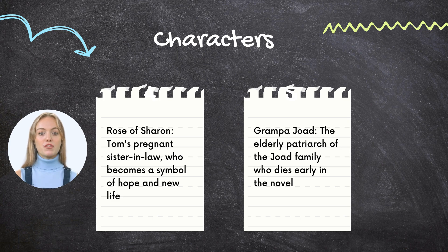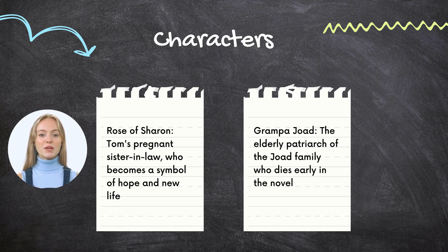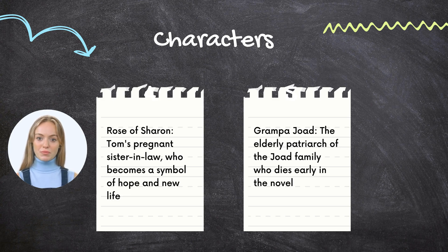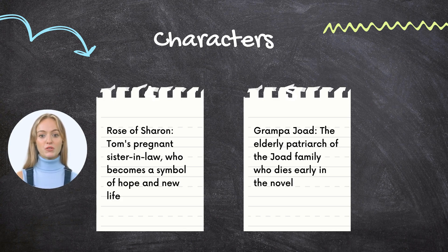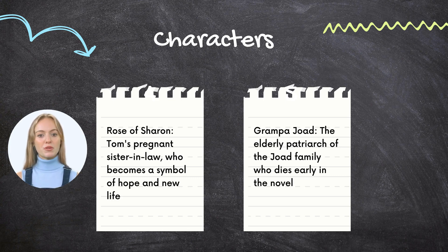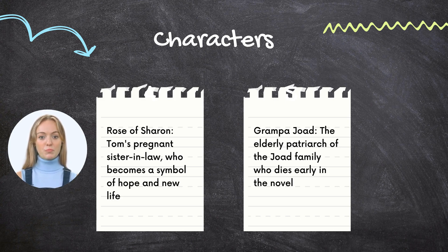Grandpa Joad is a symbol of the traditional values and ways of life being threatened by the Great Depression. He is deeply attached to his land and community in Oklahoma and resists leaving even when their farm is repossessed. Over time, Grandpa Joad becomes increasingly frail and disoriented, eventually dying during the family's journey to California. His death symbolizes the passing of an older way of life and the struggles of adapting to new circumstances. His character captures the tension between tradition and change, as well as the challenge of maintaining identity during tumultuous times.